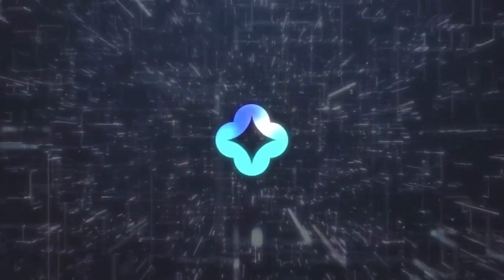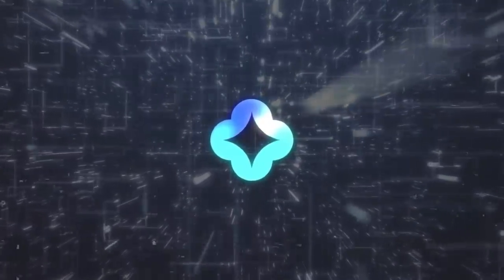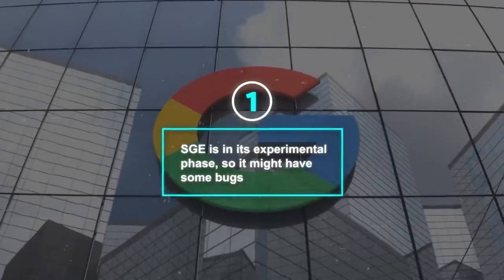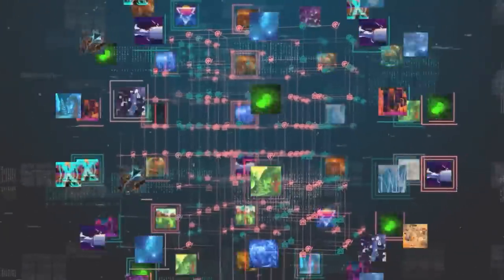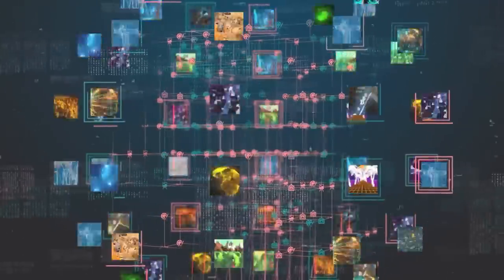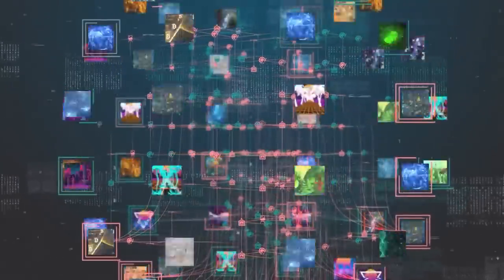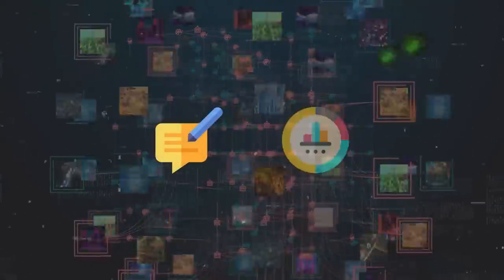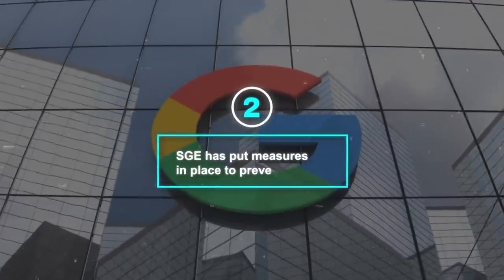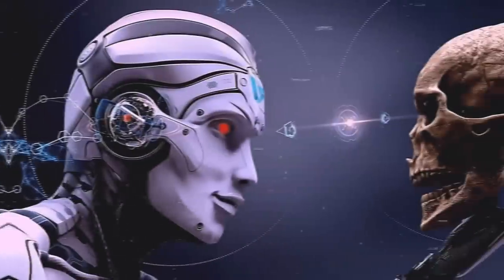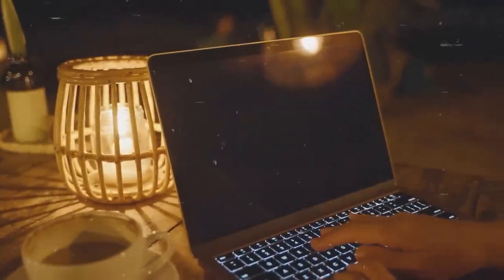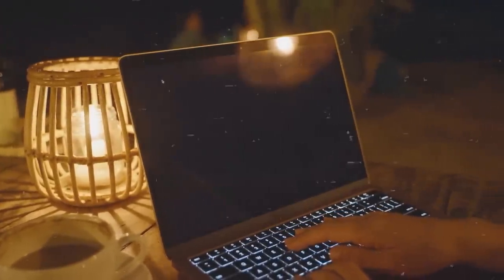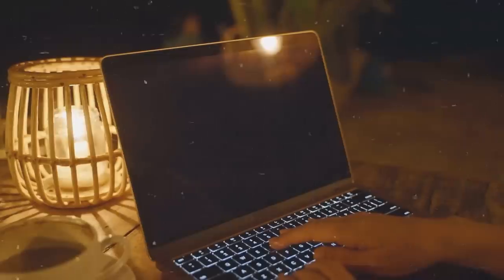Before you start using SGE, it's important to know a few things. Firstly, SGE is in its experimental phase, so it might have some bugs or errors. The AI might not always understand your request or create the image you're envisioning, since it's still improving with ongoing feedback and data. Secondly, SGE has put measures in place to prevent misuse — it won't create images that are harmful, offensive, or misleading, and it also won't create realistic images of people's faces or notable individuals without permission, to uphold privacy and prevent false information.